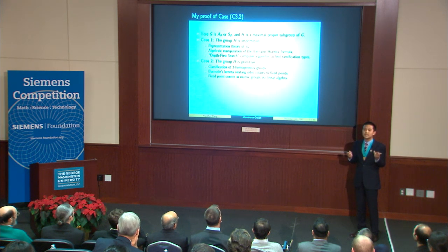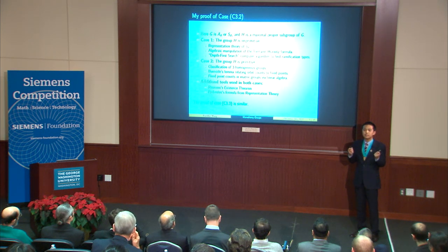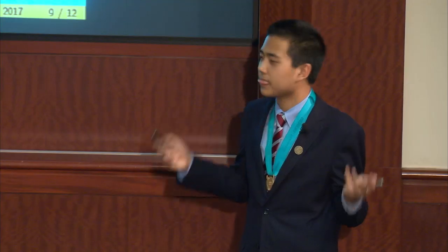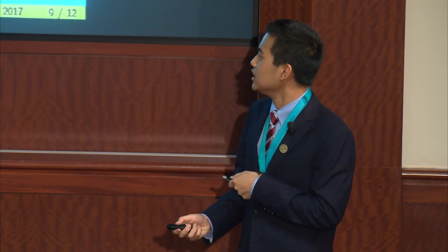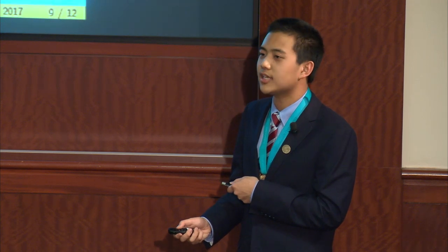An example of a result we use is that the subspace of a parent space has size dividing that of the parent space. In both cases, we use Riemann's existence theorem to determine whether or not a given collection of multisets and a monodromy group actually happens for some rational function. Riemann's existence theorem tells us that this is equivalent to the existence of a product-one tuple, which generates a monodromy group. Frobenius's formula from representation theory allows us to count the number of product-one tuples over a given ramification type. Then, using some combinatorics, we can filter out the monodromy groups which are actually generated. The proof of case C3.3 is similar.